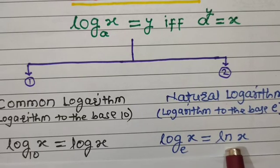Rule number 3 is the power rule: the logarithm of m to the power n, where n is the power of m and the base of the log is b, is equal to n multiplied by the logarithm of m to the base b. The power becomes a multiplier of the log: n into log base b of m.